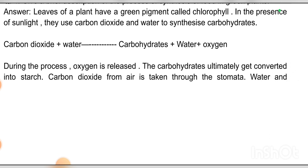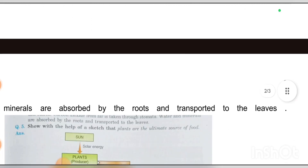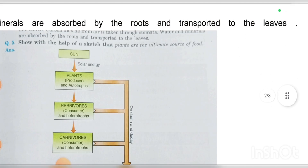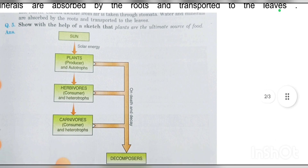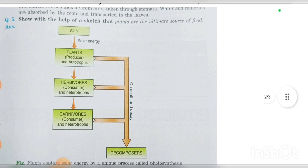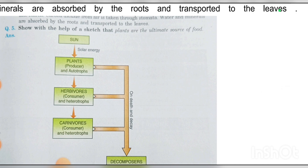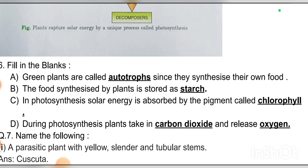During the process, oxygen is released. The carbohydrates ultimately get converted into starch. Carbon dioxide from air is taken in through the stomata. Water and minerals are absorbed by the roots and transferred to the leaves. Plants are the ultimate source of food — the food chain goes: sun, plants, herbivores, carnivores, then decomposers. Fill in the blanks: green plants are called autotrophs since they synthesize their own food. The food synthesized by plants is stored as starch. In photosynthesis, solar energy is absorbed by the pigment called chlorophyll. During photosynthesis, plants take in carbon dioxide and release oxygen.